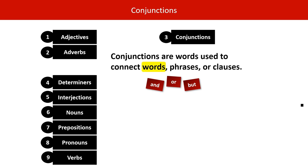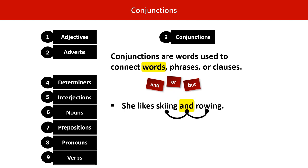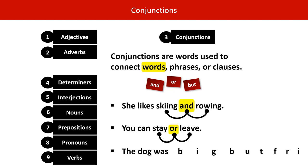Let's see how they connect words. 'She likes skiing and rowing.' Here, 'and' is a conjunction connecting the words skiing and rowing. 'You can stay or leave.' Or connects the words stay and leave. 'The dog was big but friendly.' But connects the words big and friendly.